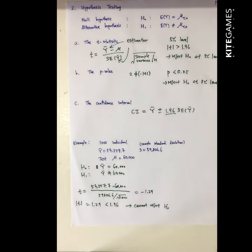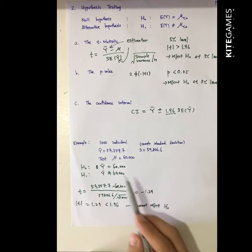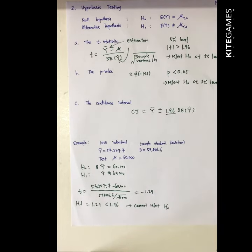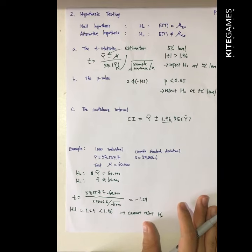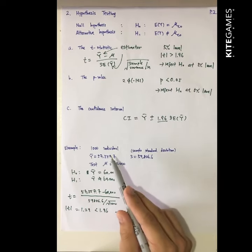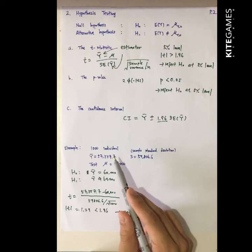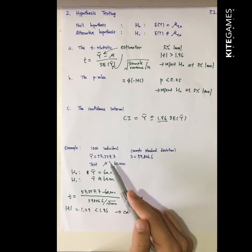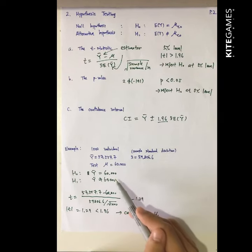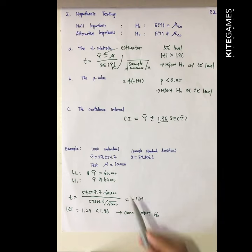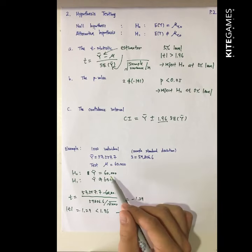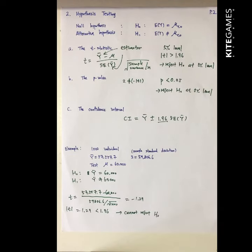Can we say we accept the null hypothesis? No, because the sample is just randomly drawn from the population. We can only say that among these 1,000 individuals, there is not enough evidence to show that their income is significantly different from 60K. We cannot reject it, but that does not mean we accept it.